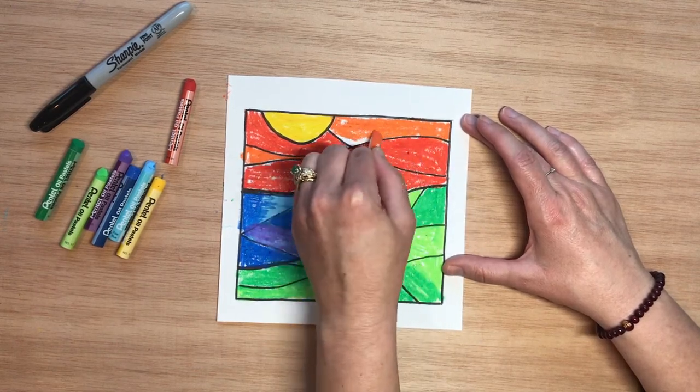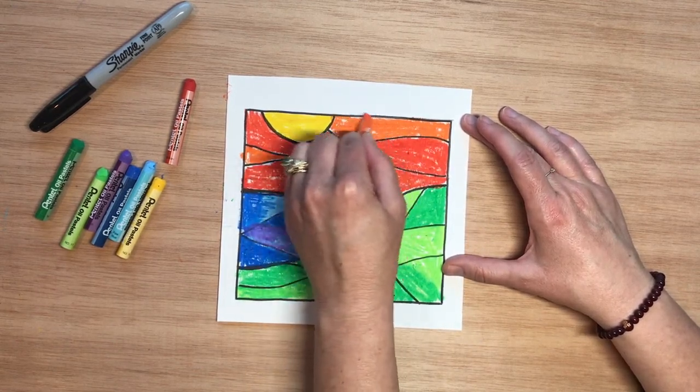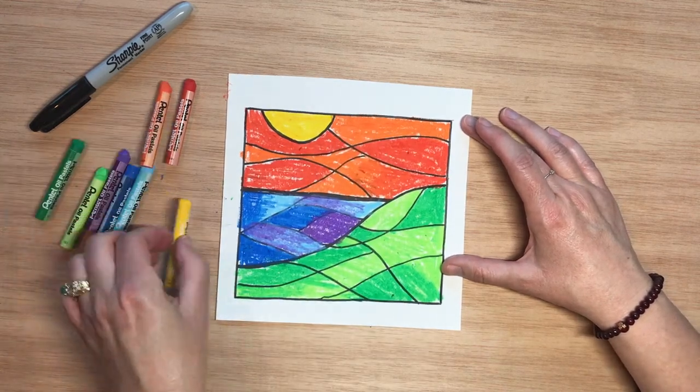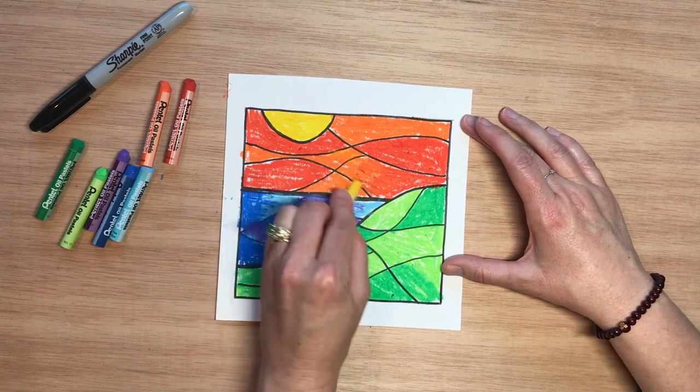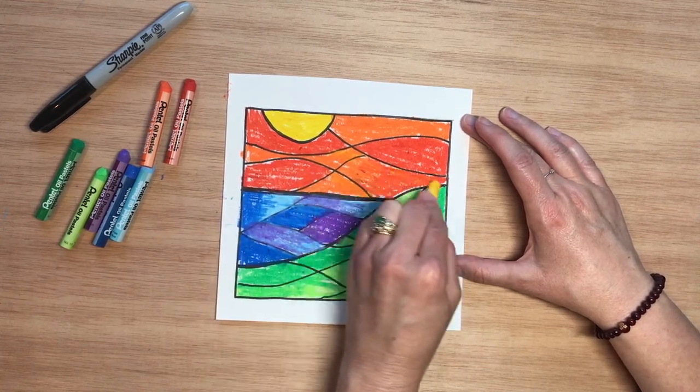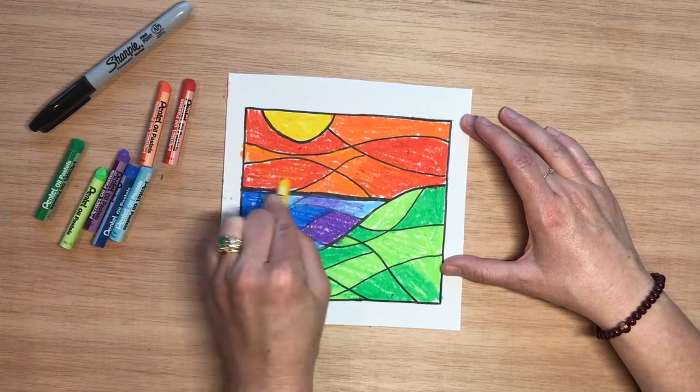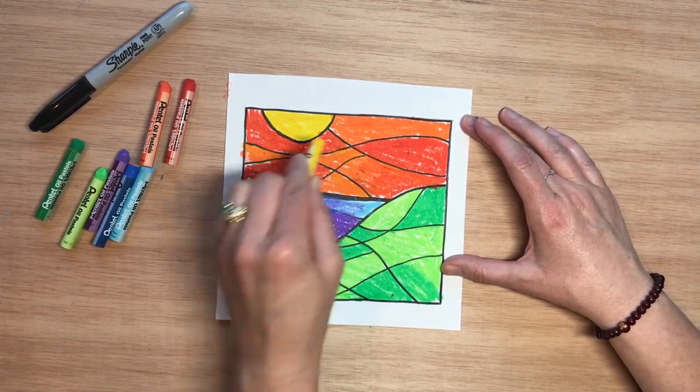And like I said, you can do this with colored pencils or with crayons or if you find some paint somewhere. I think too, I might add a little bit of yellow highlights here. Like maybe the sun is reflecting a little bit in here. But there we go.